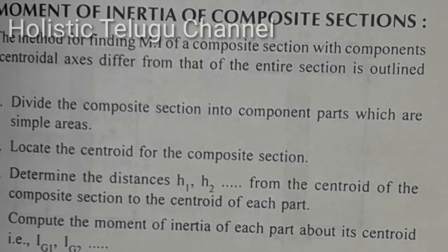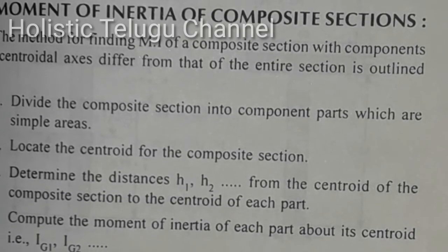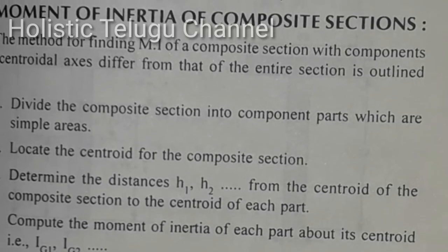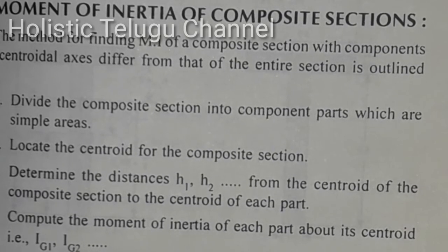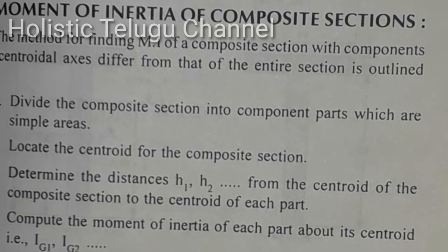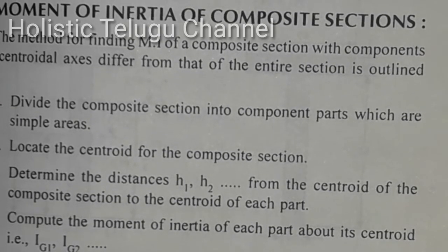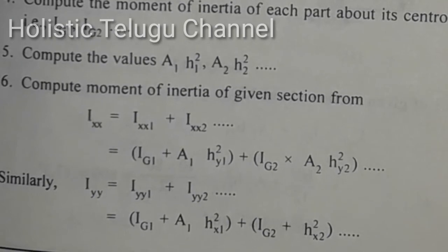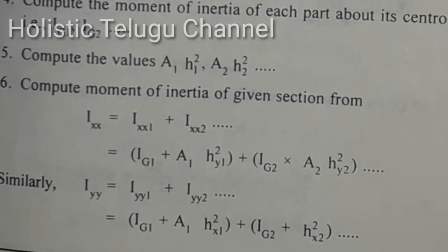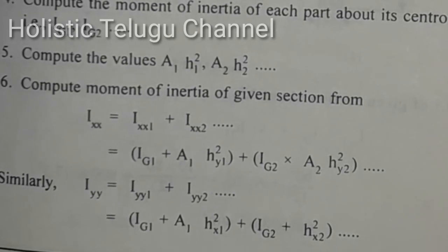We need to find the total moment of inertia. The difference involves H1 and H2. When we apply the parallel axis theorem, our formula is: I_AB equals I_g plus A·h². So, I_AB = I_g + A·h².